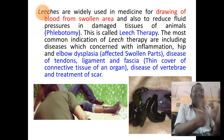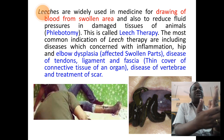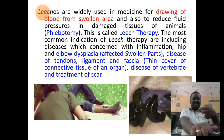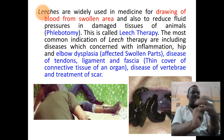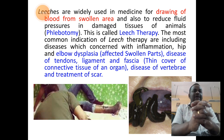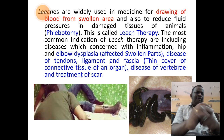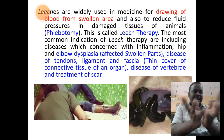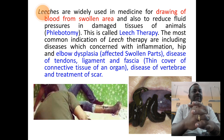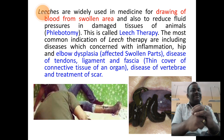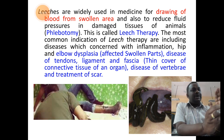Leeches are widely used in the field of phlebotomy, and this is called leech therapy. Even syringe needles can be used to pierce and draw blood — that is also phlebotomy — but when leeches are used for the process it is specifically called leech therapy. The most common indications of leech therapy include diseases where swelling or inflammation is a common symptom: swelling of the hip, swelling of the elbow, diseases of tendons, ligaments, fascia, vertebrae, and treatment of scars.